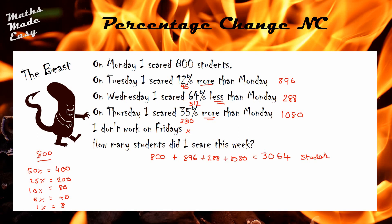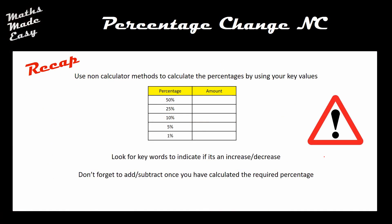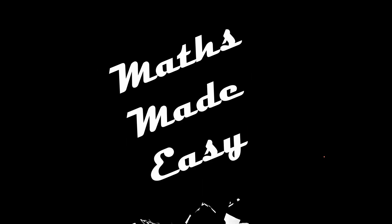Well done if you got that — it was quite difficult with lots of calculations going on at once. To recap: using non-calculator methods you need those five key values — 50%, 25%, 10%, 5%, 1% — every single time. Always look for words in the question to indicate whether something has increased or decreased. A key exam mistake is forgetting to actually add or subtract once you've found your percentage — this question is about changing, so make sure you complete that final step. Hopefully you found this useful — don't forget to like, share, and subscribe. See you next time.